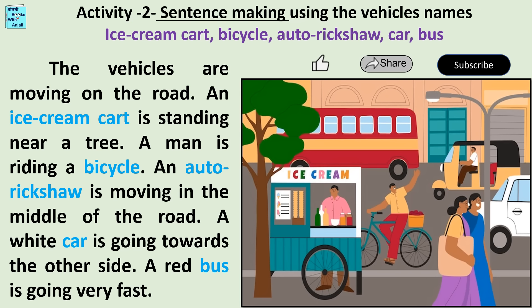A man is riding a bicycle. An auto rickshaw is moving in the middle of the road. A white car is going towards the other side. A red bus is going very fast.